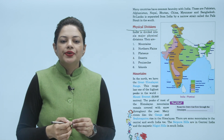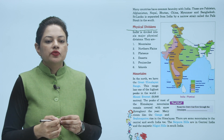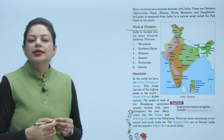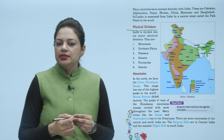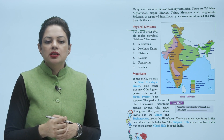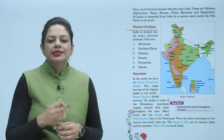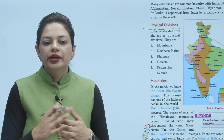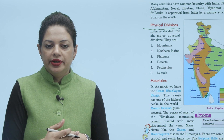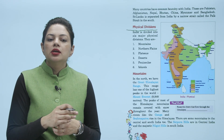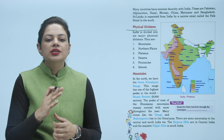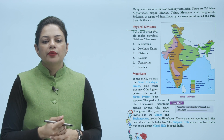India is divided into six major physical divisions. They are: first, mountains; second, northern plains; third, plateaus; fourth, deserts; fifth, peninsula; and sixth, islands. So India's landform is divided into six parts.